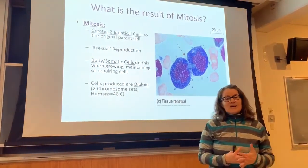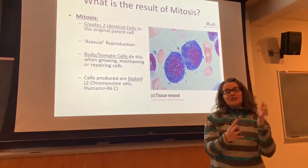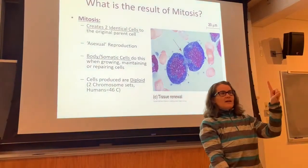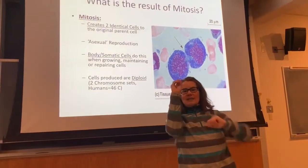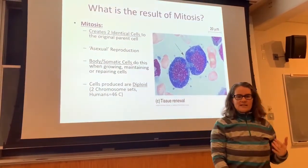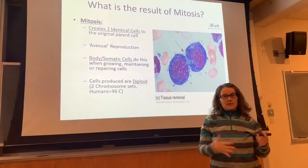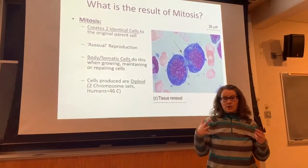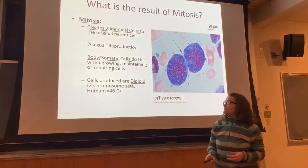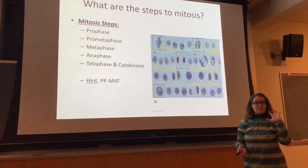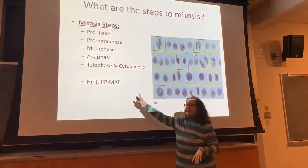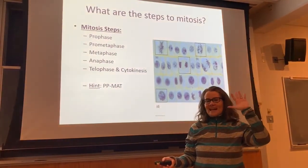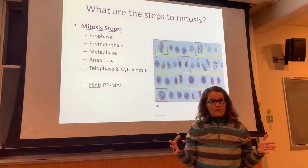In mitosis, you're going to start with one cell and divide it into two identical daughter cells — clones of the original cell. These are body cells. This is asexual reproduction, so we want the chromosomes and everything to be identical to the original cell. Mitosis has five steps — I remember this as PP MAT: prophase, prometaphase, metaphase, anaphase, and telophase and cytokinesis. Make sure you know the order of those five steps.